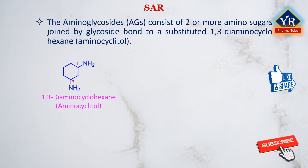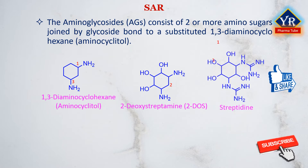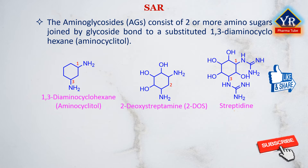The ring is a 2-deoxystreptamine (2-DOS) in all aminoglycosides except streptomycin and dihydrostreptomycin, where it is streptidine. Thus, in the kanamycin and gentamicin families, two amino sugars are attached to 2-deoxystreptamine. In streptomycin, two amino sugars are joined to streptidine. And in the neomycin family, there are three amino sugars attached to 2-deoxystreptamine.